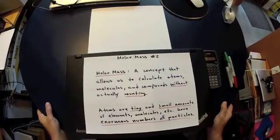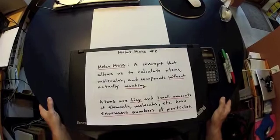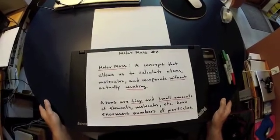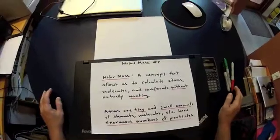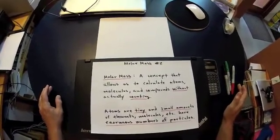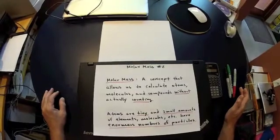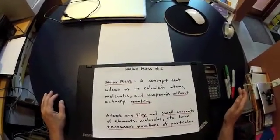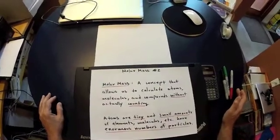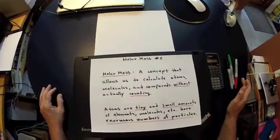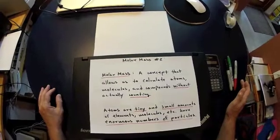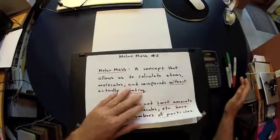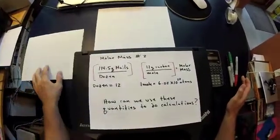Using that ratio, we can count quantities of atoms, molecules, or compounds without actually having to count them. The reason this matters is because atoms are tiny, and small amounts of atoms, molecules, or compounds contain enormous quantities of particles — numbers so large they cannot be counted using practical methods like counting marbles from a bin.